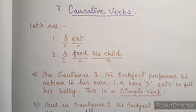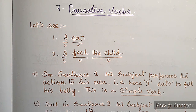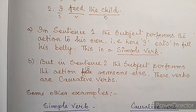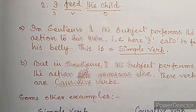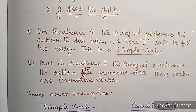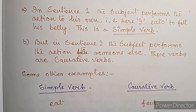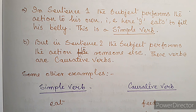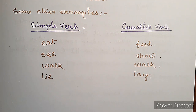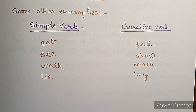A causative verb: in 'I eat', the subject performs the action for himself — this is a simple verb. But in 'I feed the child', the subject performs the action for someone else — these are causative verbs. Some examples of simple verbs and their causative forms: feed, show, walk, lie/lay.